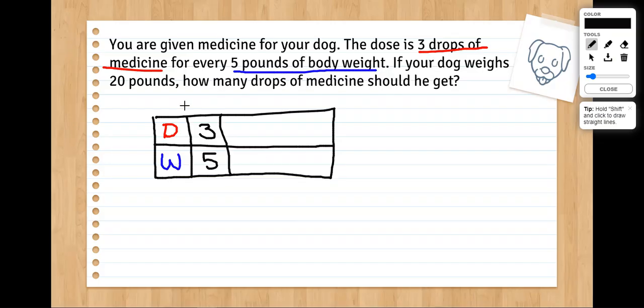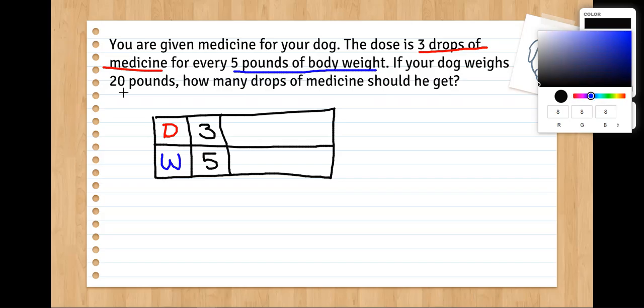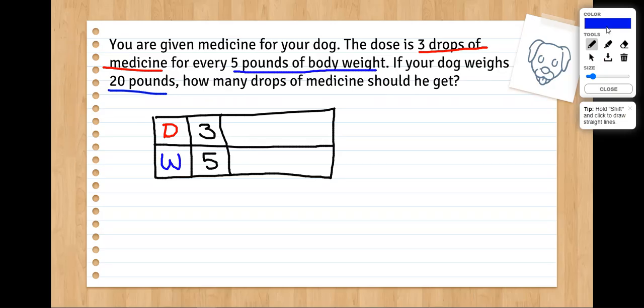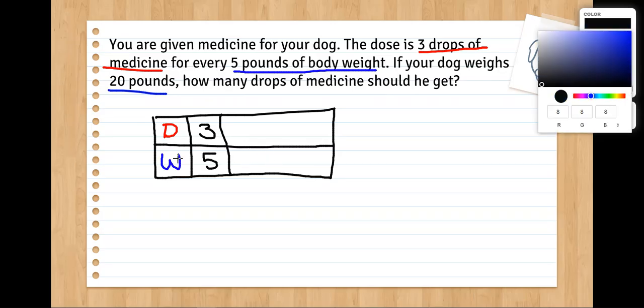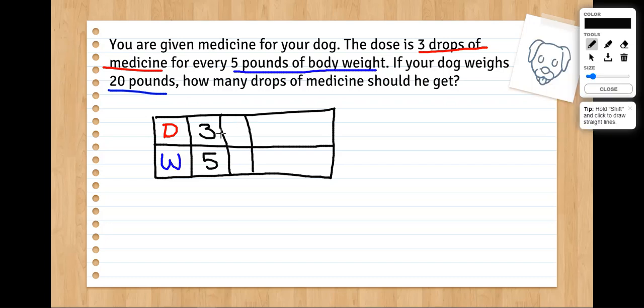And I'm trying to get to a dog that weighs 20 pounds. So I'm going to increase my ratio table until I reach 20 pounds of weight. So I'm going to multiply. This will be my times two. Three times two is going to give me six and five times two is 10. Then I need to do times three and three times three is nine. Five times three is 15. How about times four? Three times four is 12. Four times five is 20. Looks like we got it after all.